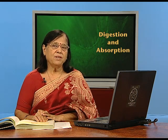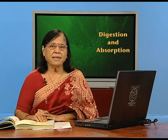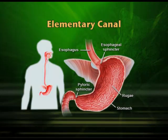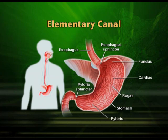The stomach is a very important organ. Structurally, it has three clear parts: cardiac stomach, fundic stomach, and pyloric stomach. The esophagus ends at the cardiac stomach, where the esophageal sphincter is located. The pyloric sphincter is present between the pyloric part of the stomach and the duodenum, so the pyloric stomach is the part that continues as the duodenum.